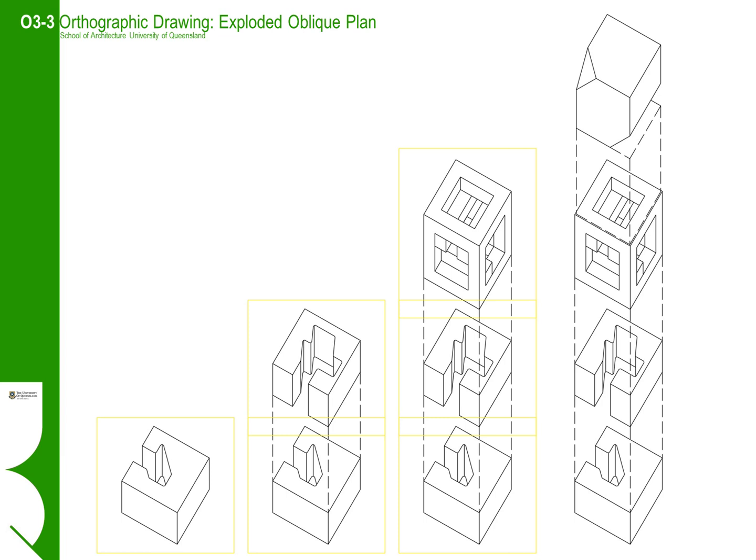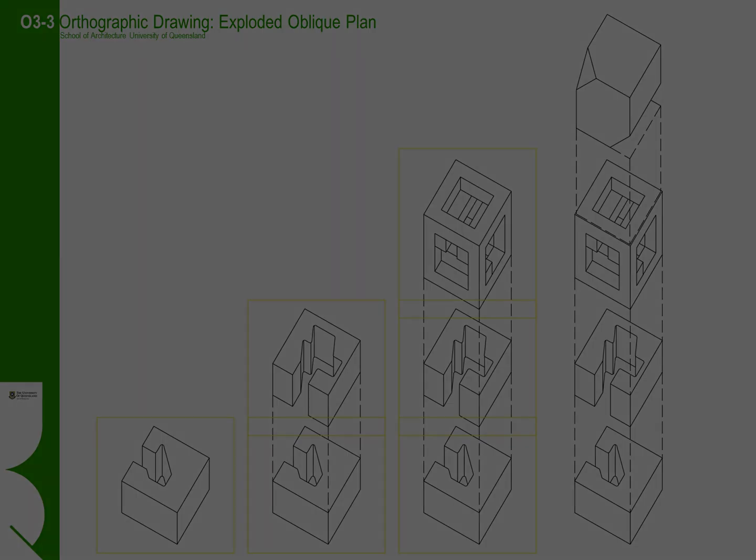This type of exploded view is particularly useful to show how buildings or objects are constructed. Often you would slice a building at different levels to see how the spaces are organised and interconnected. The legibility and relative ease of construction will mean you will end up creating many exploded paralleline drawings using the plan oblique view projection to explain your design propositions.